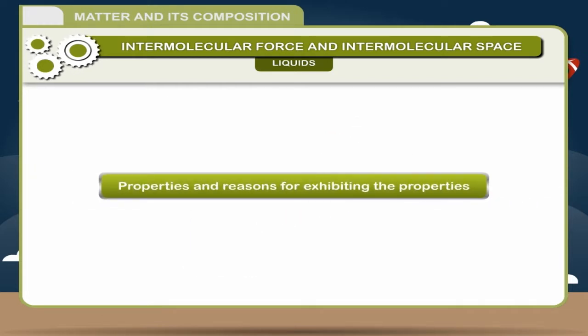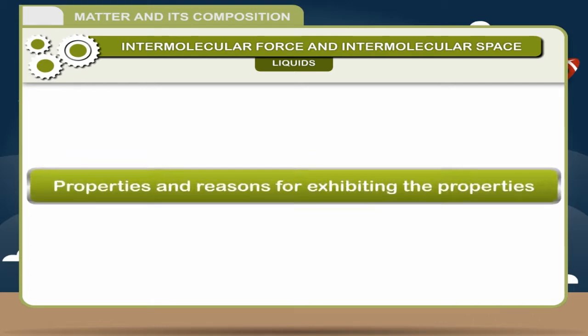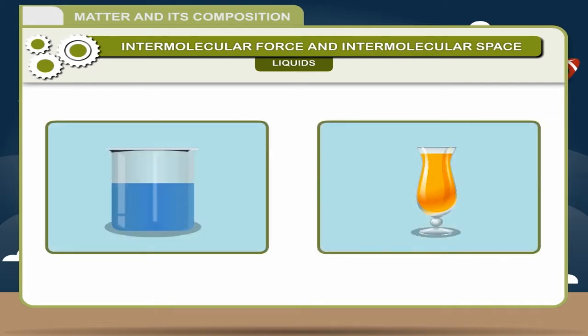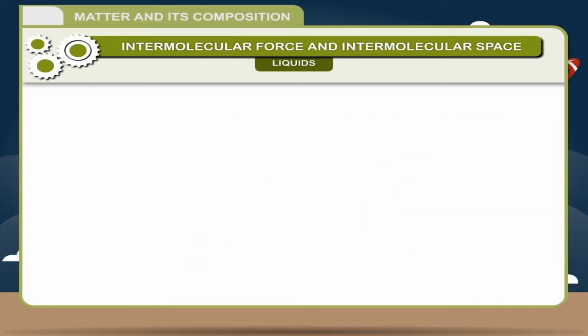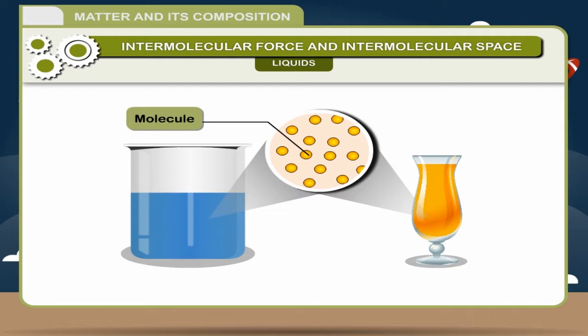Properties: Liquids don't have a definite shape but take the shape of the container in which they are kept. Reason: As molecules of liquids are not tightly packed, they can easily shift and adjust by taking the shape of container in which they are kept. Not being compact, liquids don't have a fixed shape.